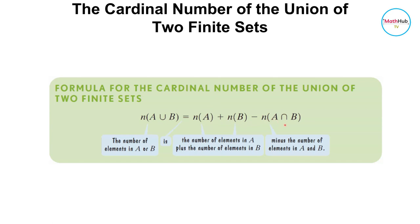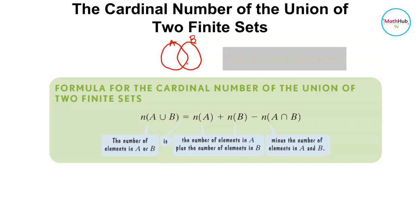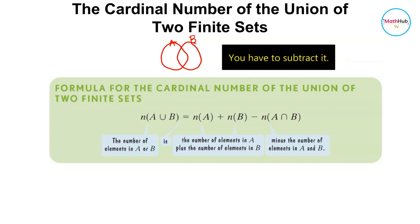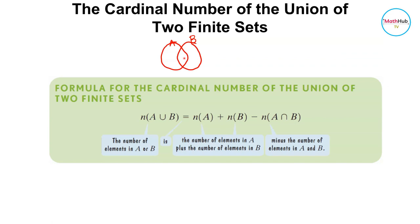We subtract n(A∩B) because if we simply add all elements of A plus all elements of B, we are counting the elements in the intersection region twice. Therefore we need to subtract that intersection once. That is the reasoning behind the formula n(A∪B) = n(A) + n(B) − n(A∩B).